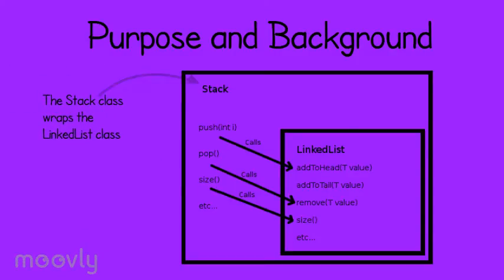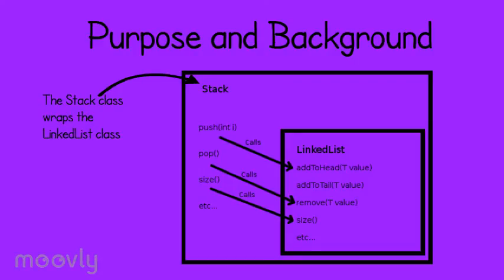We expect you to use your Lab 2 linked lists to help implement your stack, deck, and queue classes. If implemented this way, the stack, deck, and queue classes are each wrapper classes. Wrapper classes use another class — in this case the linked list — for most of their functionality, but they either restrict the use of the class or simply change the way that we access the class.